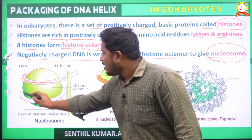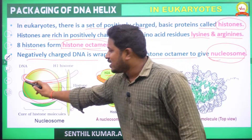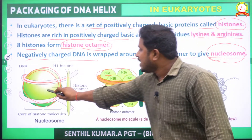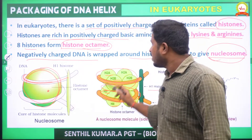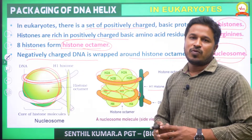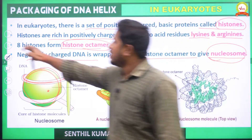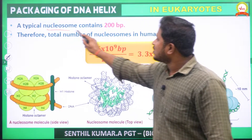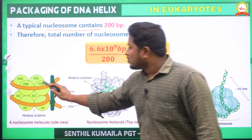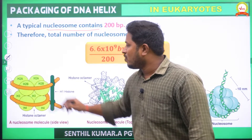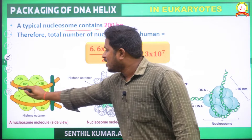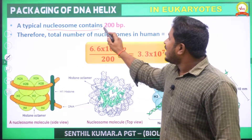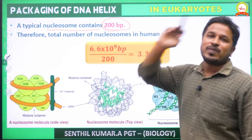This is the overall octamer stage. For understanding, only one histone is shown, but it is constituted of 8 histone proteins. A typical nucleosome contains about 200 base pairs of DNA — that is, 200 nitrogenous base pairs.